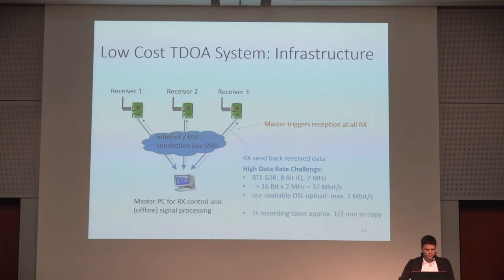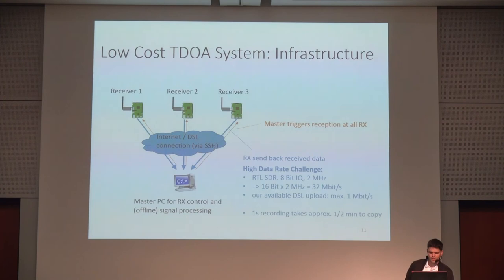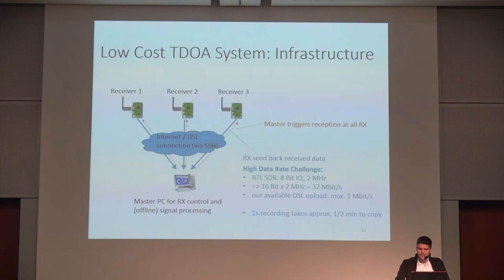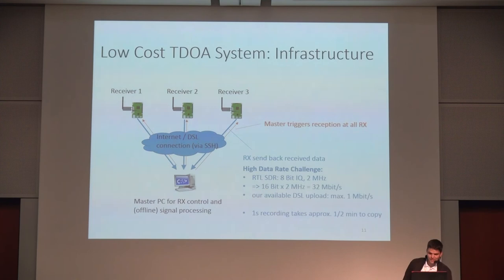The receivers are connected to a master PC via DSL internet connection. The master triggers a reception at the receivers, they receive a portion of data, and send it back to the master. One thing to consider is that quite high data rates occur: the RTL-SDR outputs 8-bit IQ data sampled at 2 MHz, giving a total data rate of 32 Mbit per second. The available DSL upload was only 1 Mbit, so recording just one second takes approximately half a minute to transfer back — far from real-time processing.